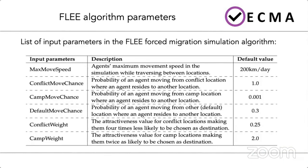There are six main input parameters analyzed for sensitivity analysis. Agent decisions depend on: max move speed — the agent's maximum speed while traversing between locations, with a default value of 200 kilometers per day; conflict move chance — the probability of agents moving from conflict locations, default 1.0; camp move chance — probability of moving from camp locations, default 0.001; and default move chance — probability of moving from other locations such as towns, default 0.3. We also have conflict weight — attractiveness for conflict locations, making them four times less likely to be chosen as a destination, default 0.25; and camp weight — attractiveness for camp locations, making them twice as likely to be chosen, default 2.0.